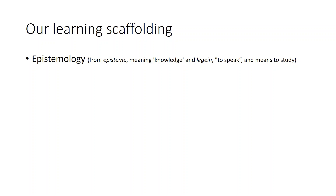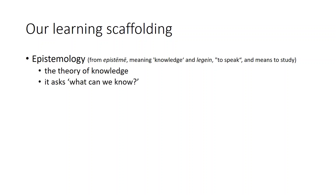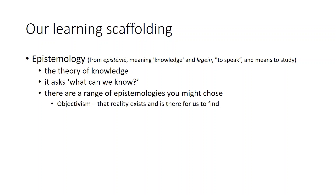The first element we'll talk about is epistemology. This means knowledge — epistemology is the theory of knowledge. It asks: what can we know? There are a range of epistemologies that you might choose. The first of those is objectivism, and the idea here is that reality exists and it is out there for us to find.